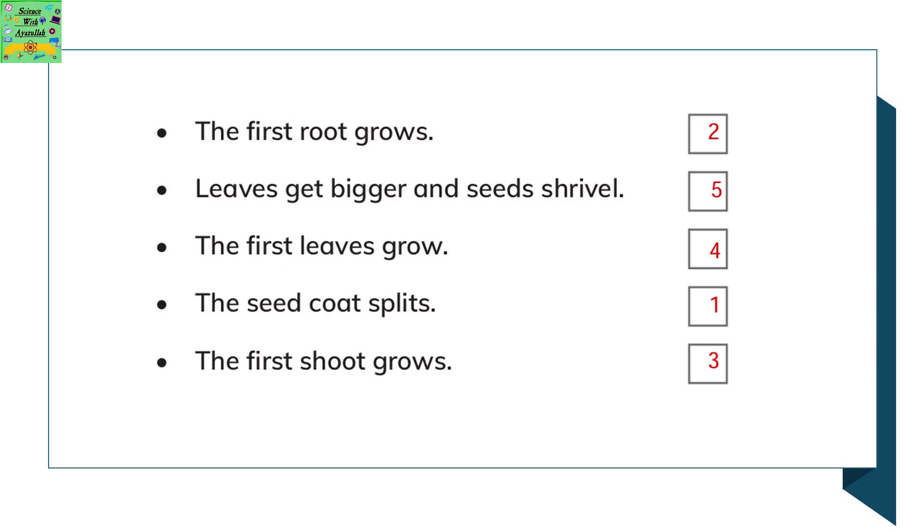The first root grows in step 2. Leaves get bigger and seeds shrivel in step 5. The first leaf grows in step 4. The seed coat splits in step 1. And the first root grows further in step 3.